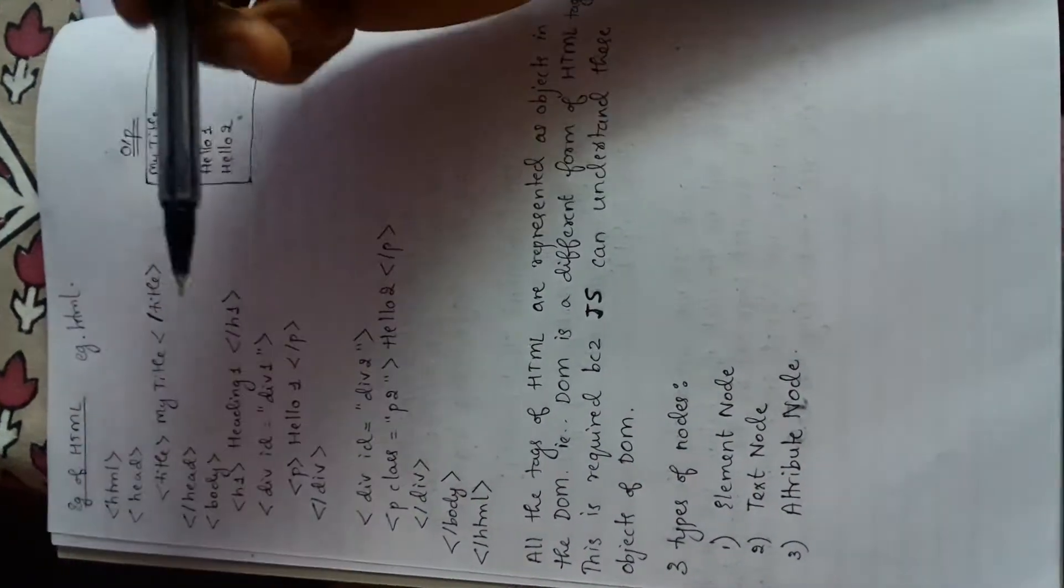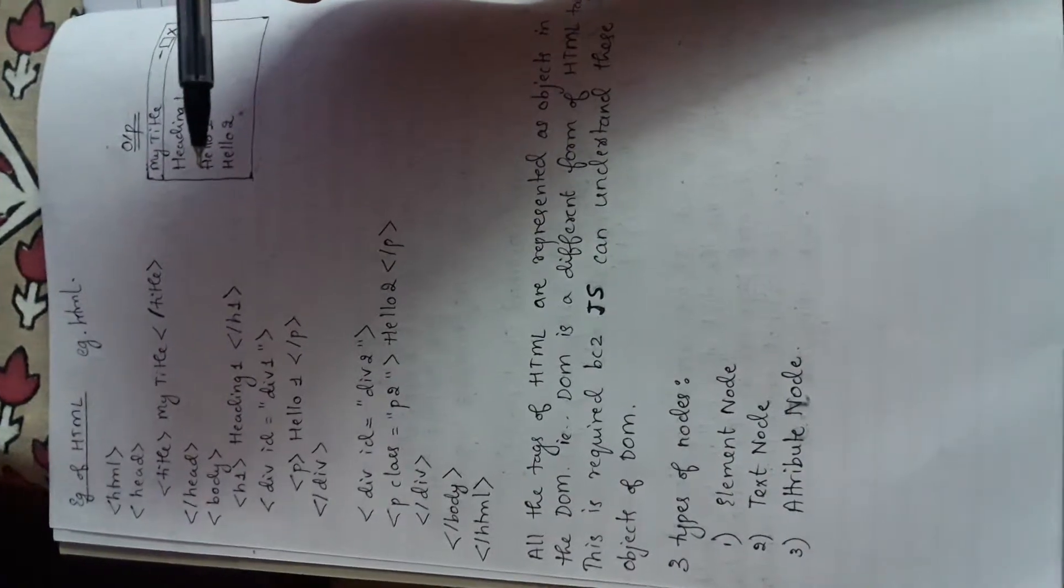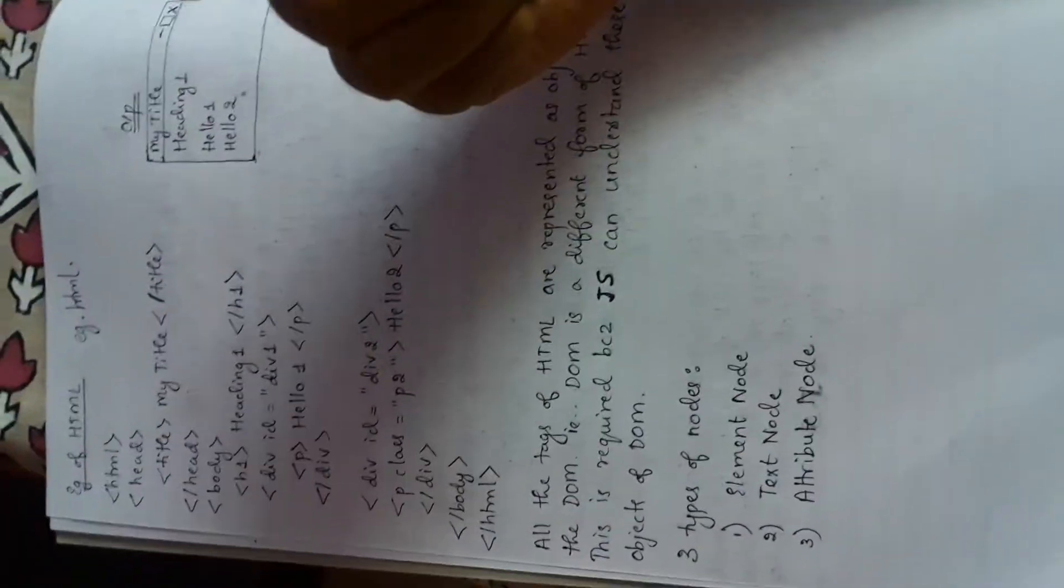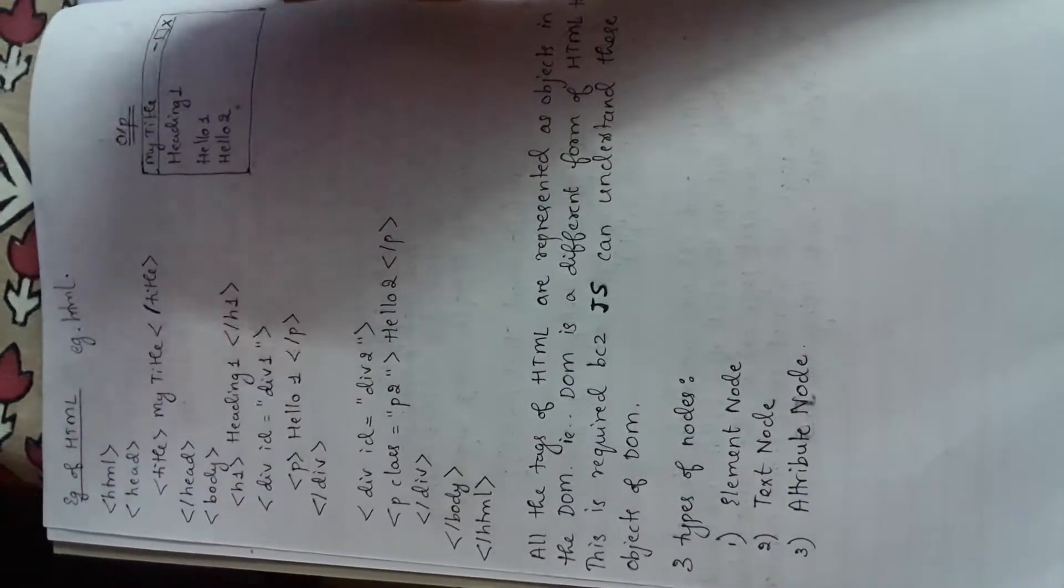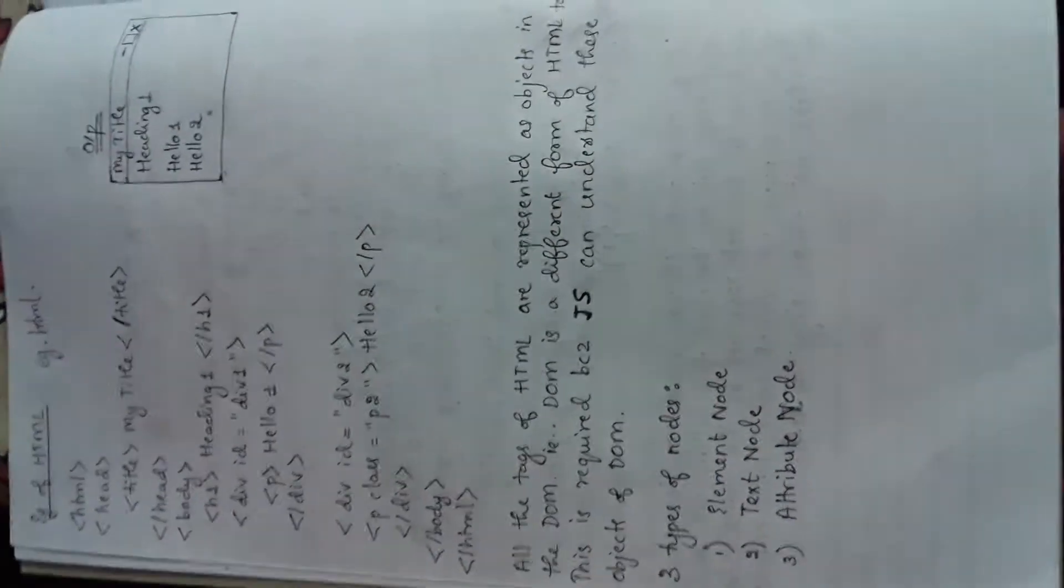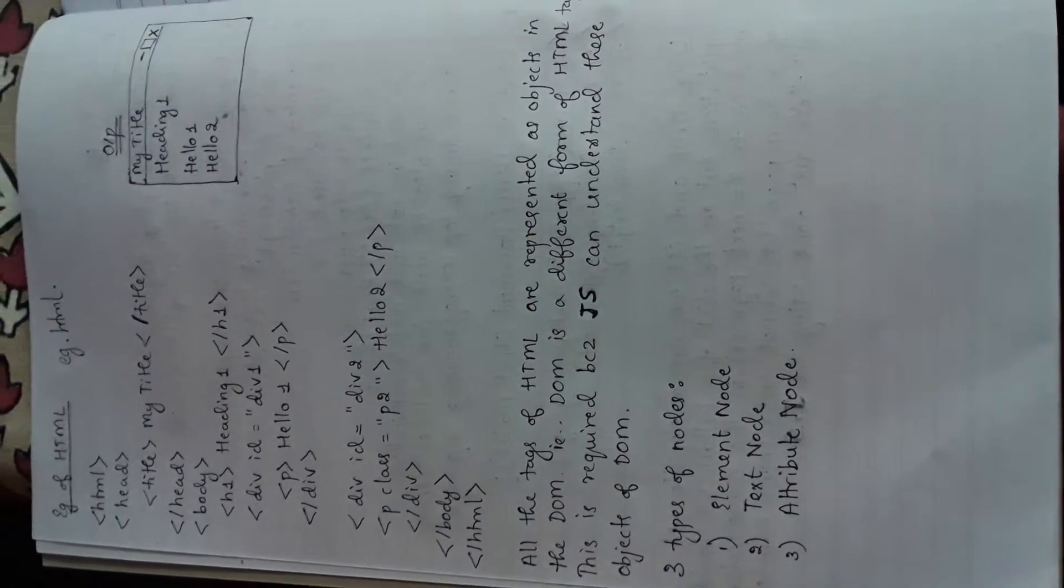There are three nodes that are present in this JavaScript: element node, text node, and attribute node. The details of all these nodes would be discussed in the further sessions or further videos.